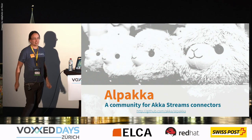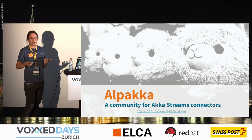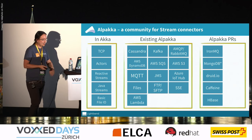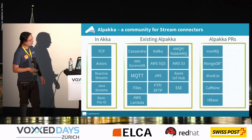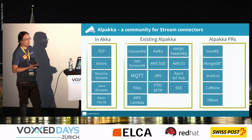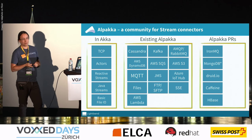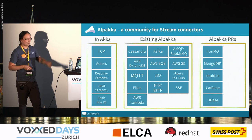Sometimes you want to connect things in ways nobody anticipated — like two dogs and a cucumber. For this we have Alpakka, a community project to build connectors to different technologies — think of it as a modern Camel. Already available are connectors to Cassandra, Kafka, RabbitMQ, DynamoDB, a bunch of other Amazon technologies, JMS, FTP, files, and more. There's also a CSV parsing/rendering stage in progress. These connectors act as sources or sinks that connect to a database or to AWS Lambda for function processing on Amazon.